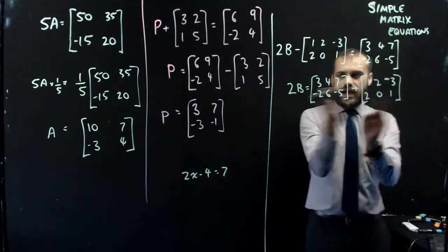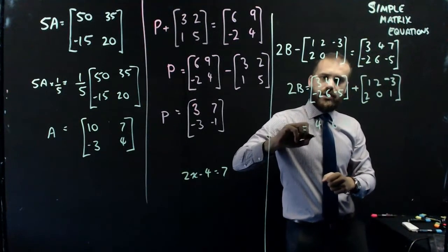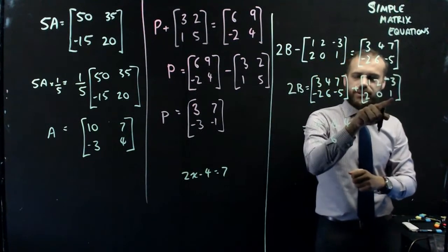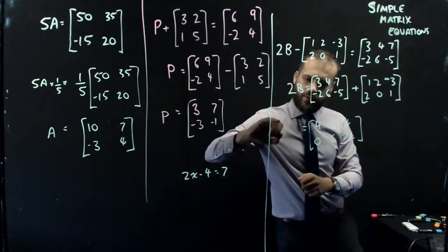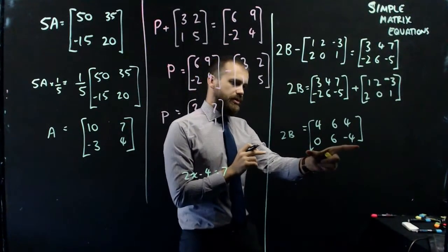All right, and we can add those matrices together. So 4, 6, 4, negative 2 plus 2 is 0, 6, negative 5 plus 1 is negative 4. And that says that 2B equals this matrix.